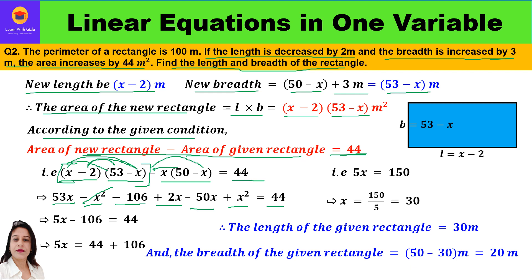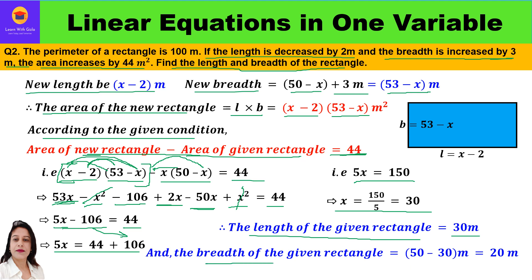Taking 106 to the other side: 5x = 44 + 106 = 150. So x = 150/5 = 30. The value of x is 30, and x was the length of the given rectangle, so length = 30 meters. Breadth of the given rectangle = 50 − 30 = 20 meters. This is how we have calculated the length and breadth of the given rectangle.